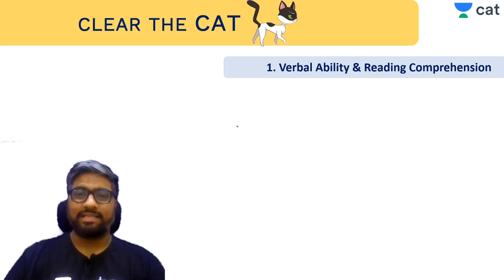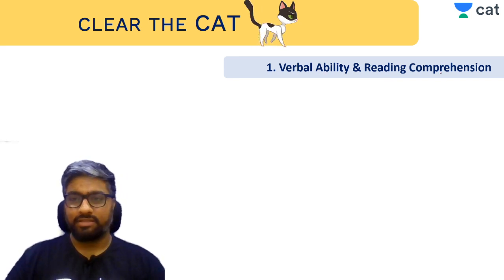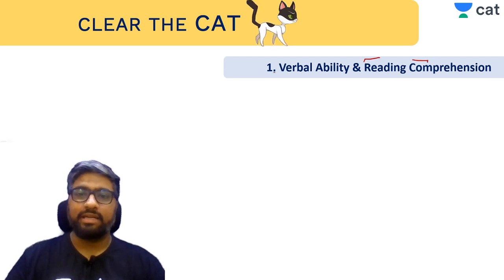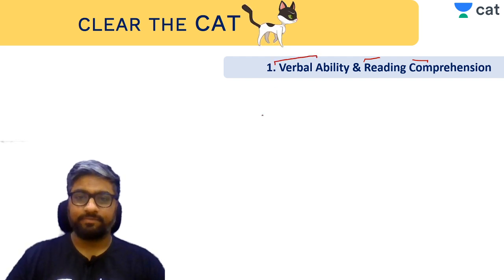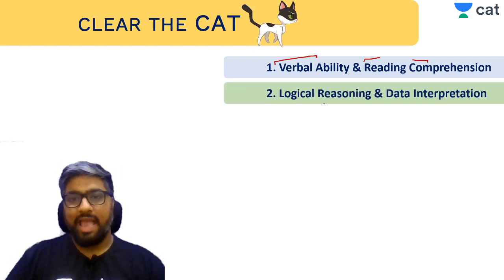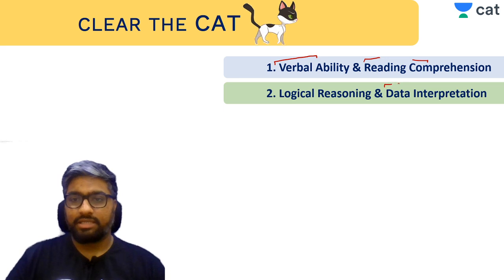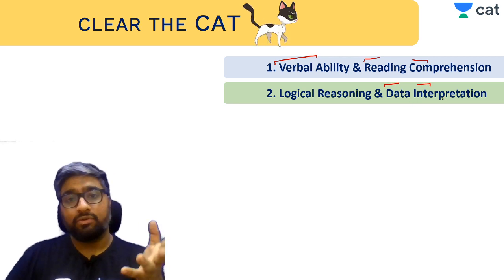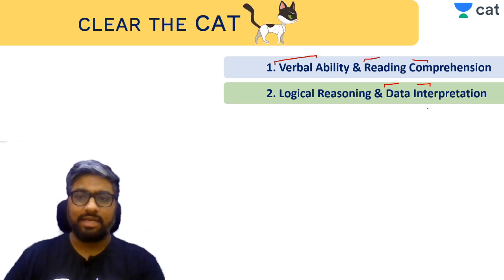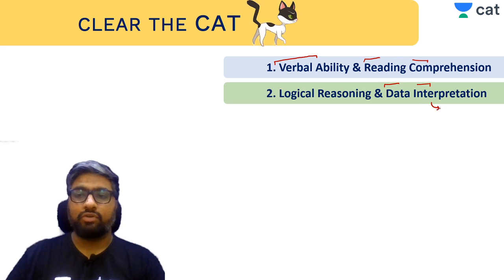The first section of CAT — and the test order follows this sequence — is VARC: Verbal Ability and Reading Comprehension. Reading comprehension is clear in meaning. In Verbal Ability, there are series of concepts tested that you'll come to know in detail. The next section is LRDI — Logical Reasoning and Data Interpretation — where data in the form of graphs, charts, and tables is given and you answer math-based questions by interpreting that data.